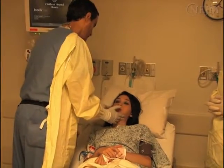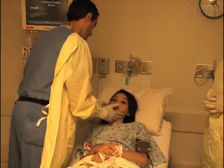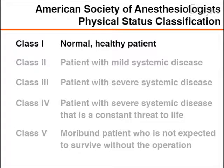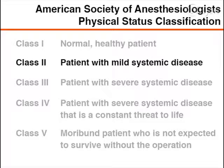Risk assessment should include a general assessment of underlying health, such as the five-point physical status classification system of the American Society of Anesthesiologists. Procedural sedation is often performed only in patients categorized as class one — a normal healthy patient — or class two — a patient with mild systemic disease — except in urgent or special situations.